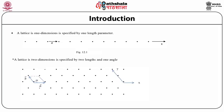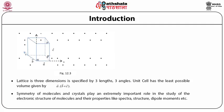A lattice in two dimensions is an arrangement of molecules in a two-dimensional plane, specified by two lengths and one angle. As shown in the slide, the lattice is specified by two vectors A and B and an angle Alpha between them. A lattice in three dimensions is specified by three lengths and three angles. The unit cell is defined as the cell with the least possible volume, given by the scalar triple product A dot (B cross C), where A, B, C are the three length parameters and Alpha, Beta, Gamma are the angles between them.